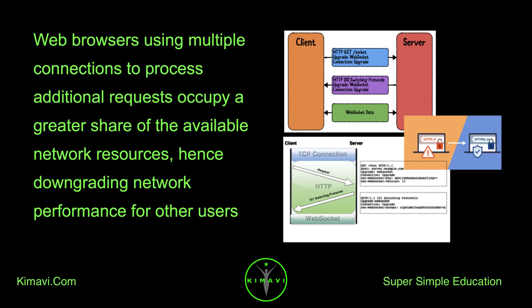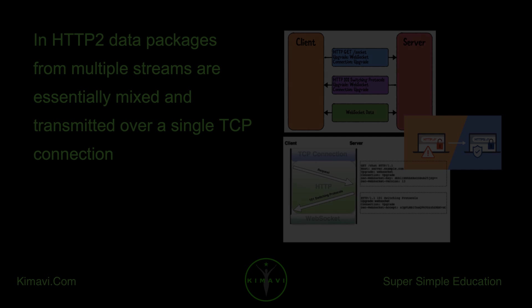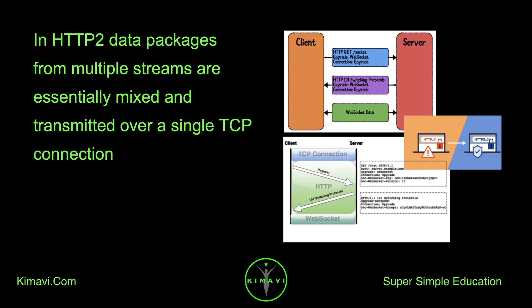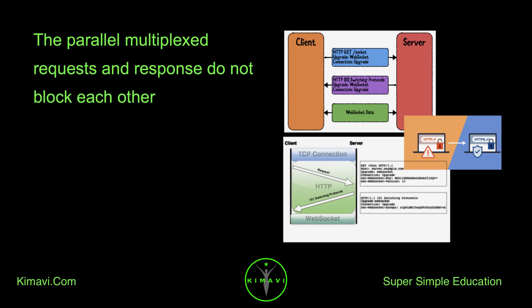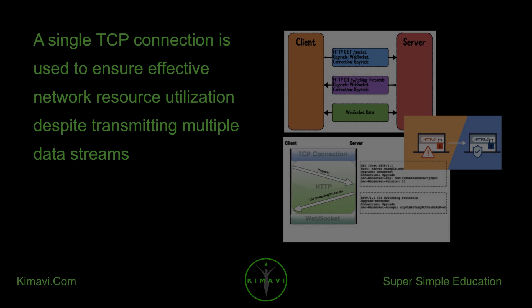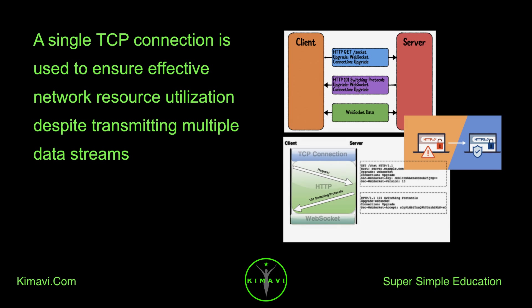Web browsers using multiple connections to process additional requests occupy a greater share of the available network resources, hence downgrading network performance for other users. In HTTP2, two data packages from multiple streams are essentially mixed and transmitted over a single TCP connection. The parallel multiplexed requests and responses do not block each other, and a single TCP connection is used to ensure effective network resource utilization despite transmitting multiple data streams.